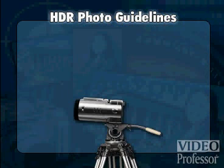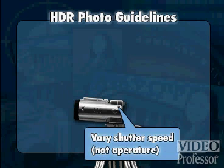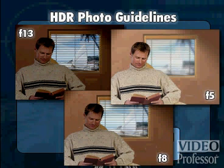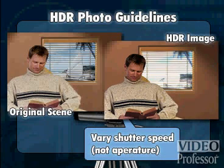Use a tripod to ensure all the photos are identical. To get different exposures in your photos, I suggest varying the shutter speed instead of the aperture. Using the aperture to vary your exposures will produce a different depth of field for each photo, which could result in a lower quality image when you merge the photos.